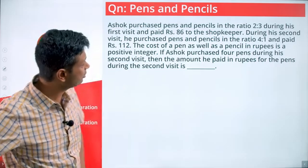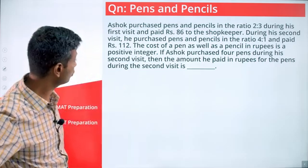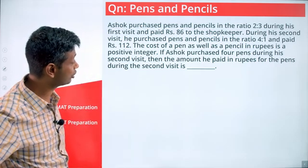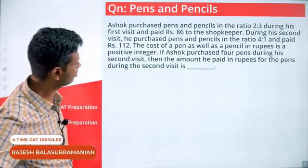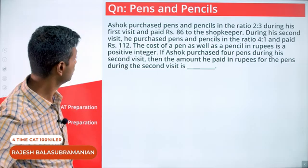Ashok purchased pens and pencils in the ratio 2:3 during his first visit and paid rupees 86 to the shopkeeper. During his second visit he purchased pens and pencils in the ratio 4:1 and paid rupees 112.